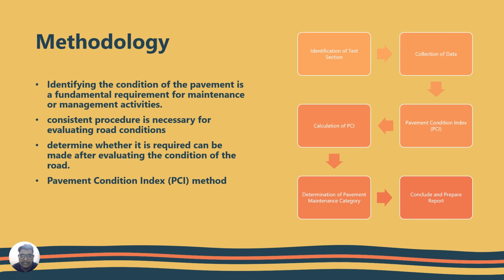We have used the PCI method in the project. Our team carried out a few steps: first, identifying the test sections of the pavement; second, collecting data of the pavement as a group; third, conducting the Pavement Condition Index PCI test; fourth, performing the calculation of the PCI; fifth, categorizing the pavement maintenance category; and finally, concluding all the data and preparing the report.